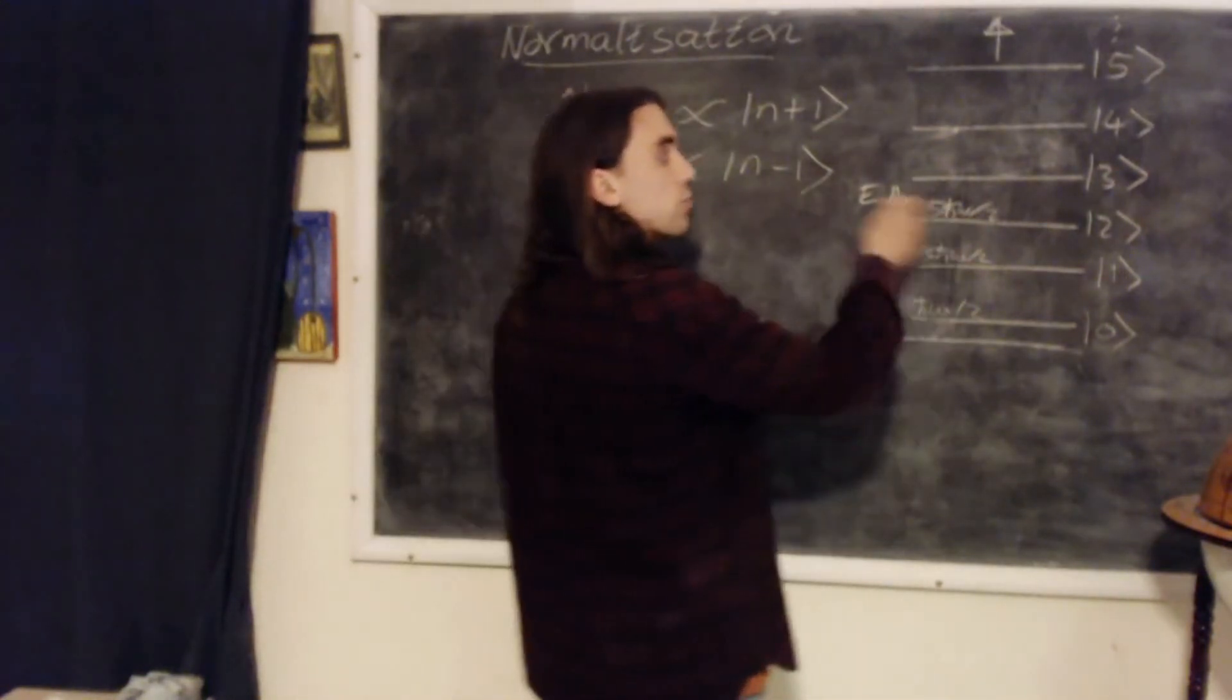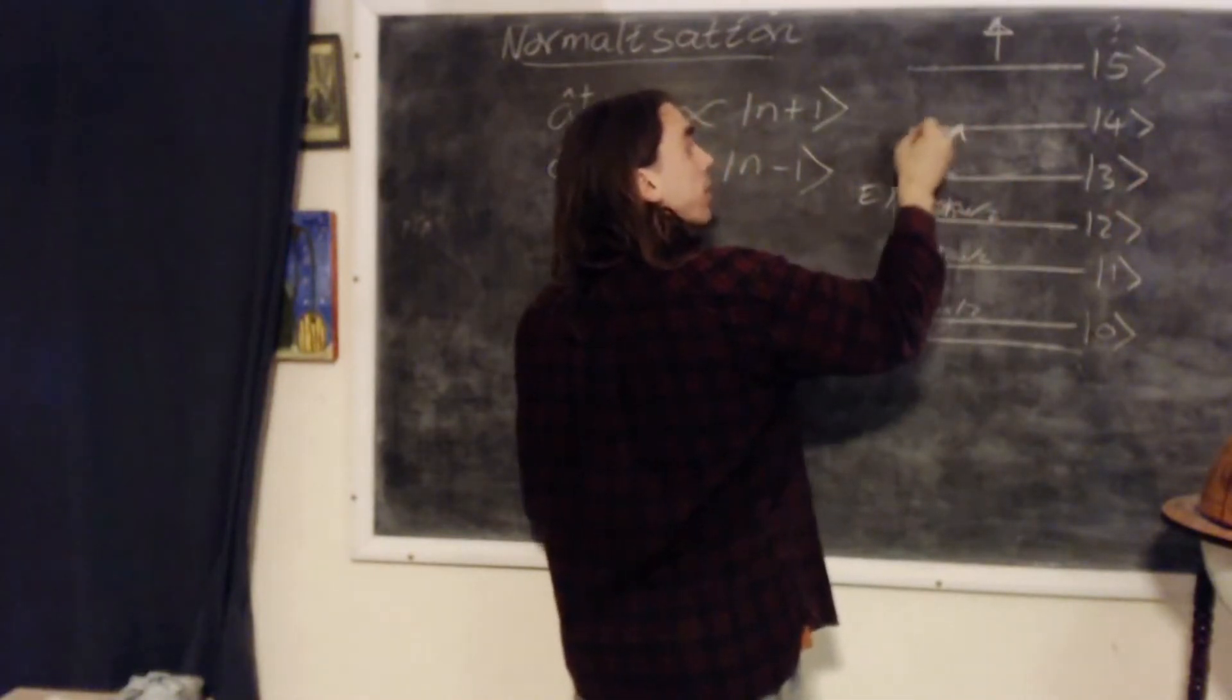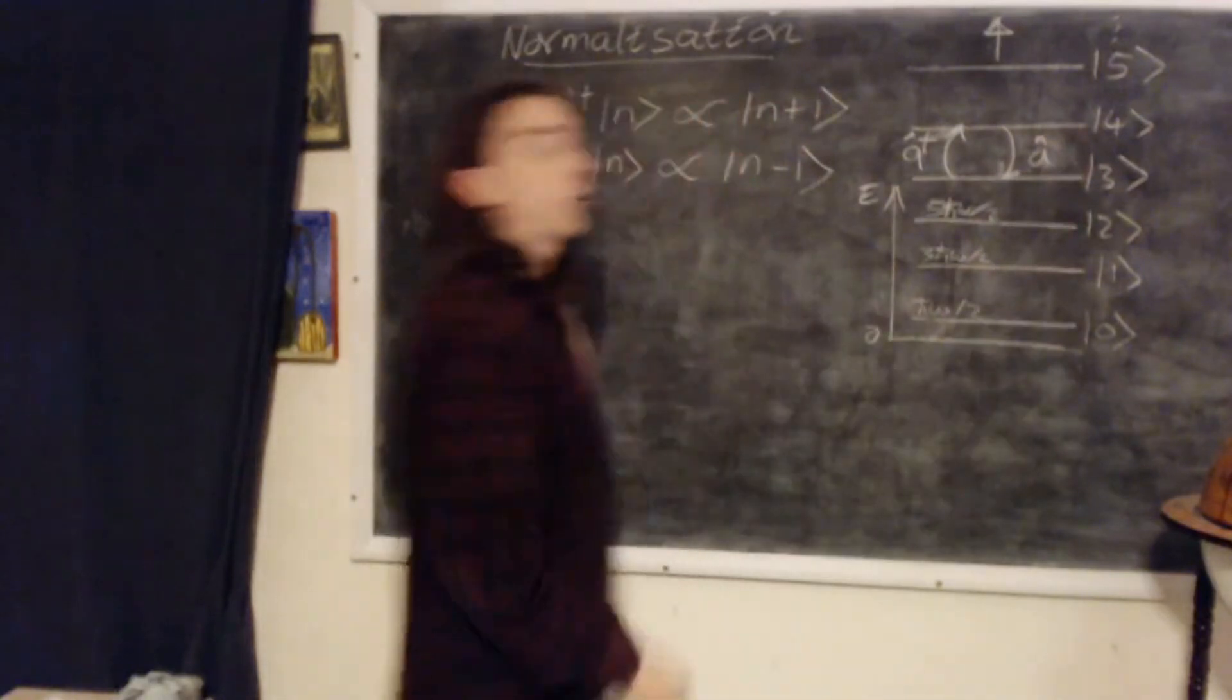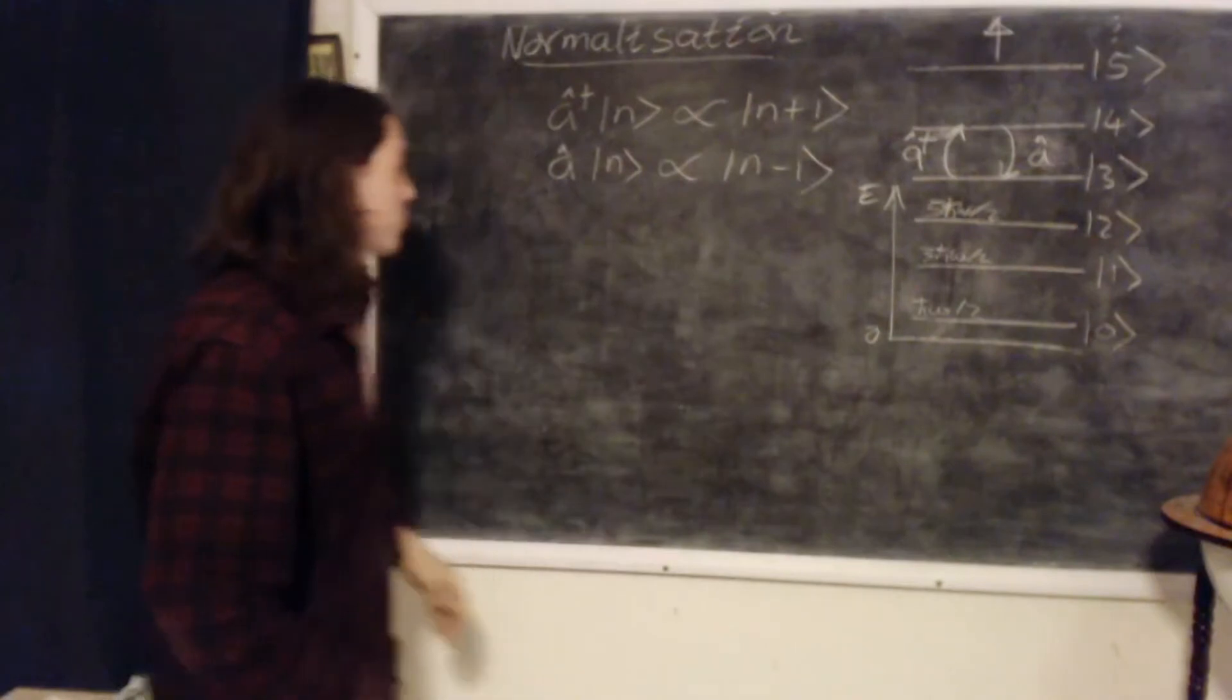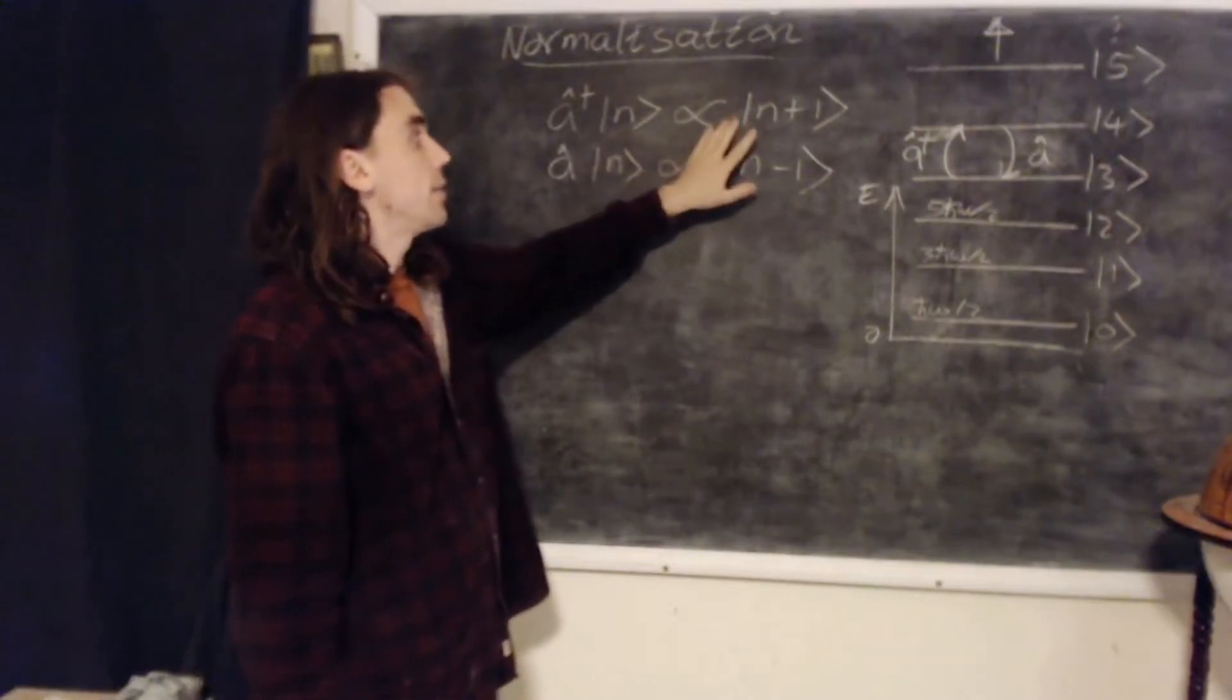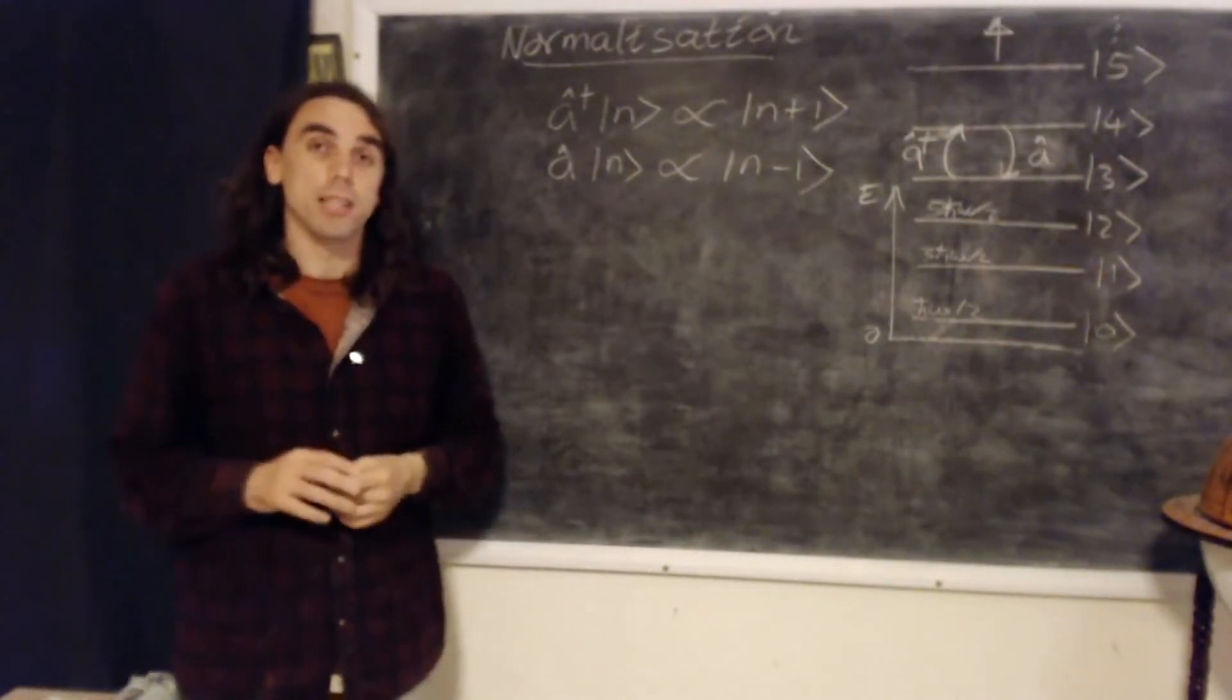The bottom rung lies at energy h bar omega over 2. And to, starting from one rung of the ladder, one state, we can go up to the next state using a raising operator, a dagger, and we can go back down using a lowering operator, a. So a daggers take us up the ladder, a's take us down the ladder. But so far we've only worked with these proportionality signs. Can we get the constants of proportionality out the front here? And we can. To do so, let's go over to the worked example area.